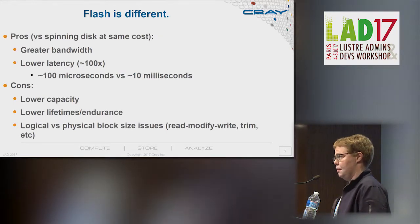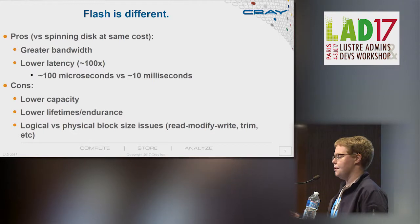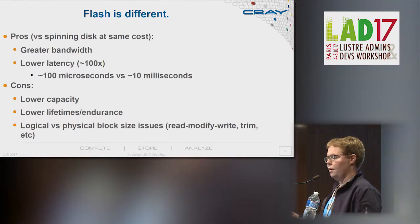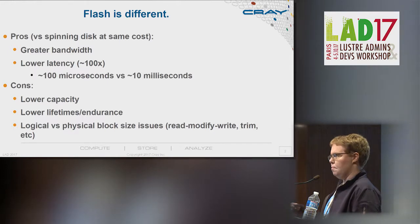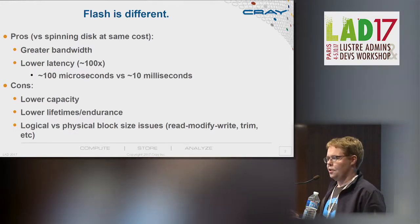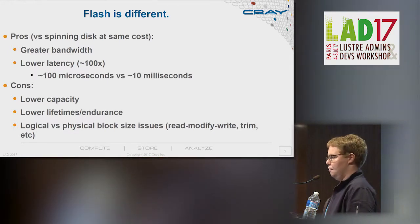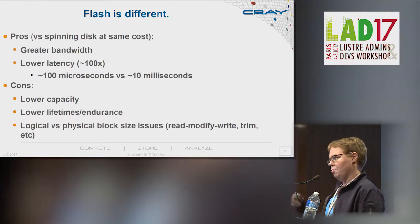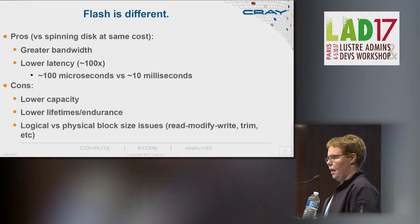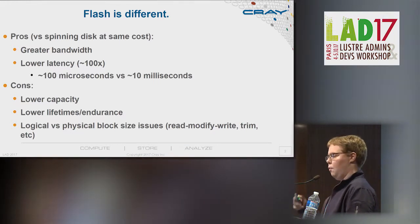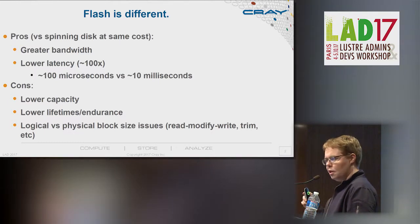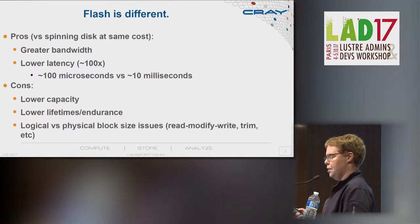Flash is different — this is sort of old news to all of us — but it's got different pros and cons than spinning disk. It's got greater bandwidth and lower latency but much lower capacity. There are problems with lifetime and endurance, block size issues. Flash doesn't necessarily have a native 4k block size, sometimes 128k, and then more complicated issues around trim and things like that, which all make flash a little more complicated to own than spinning disk.